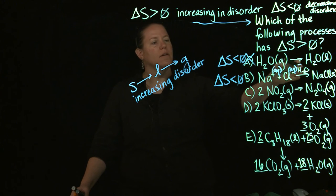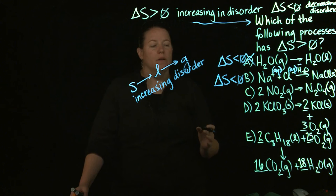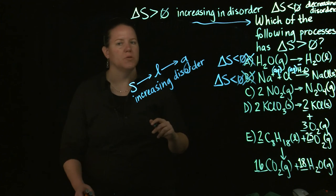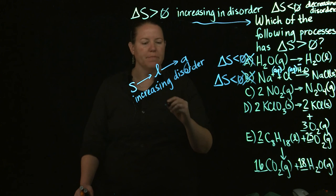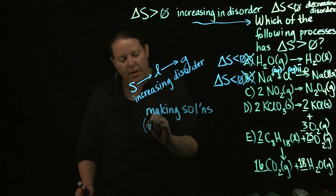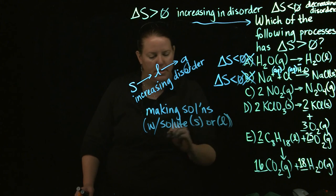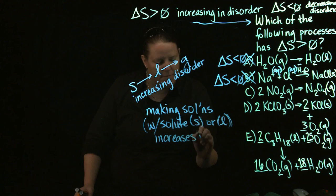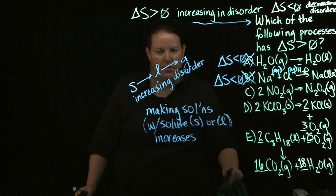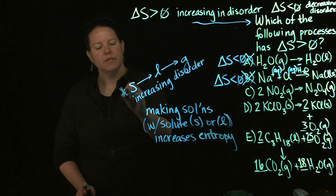So the idea here, by the way, is that if B is currently written as a decrease in entropy, then if you flip the equation, it would be the exact opposite. So I would be able to say that solution making for the vast majority of the time is an increase in entropy. So making solutions, and I'm going to be specific here, with a solute that's an S or an L increases entropy. So we know that this is true.